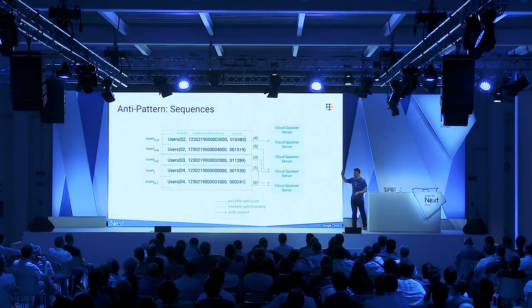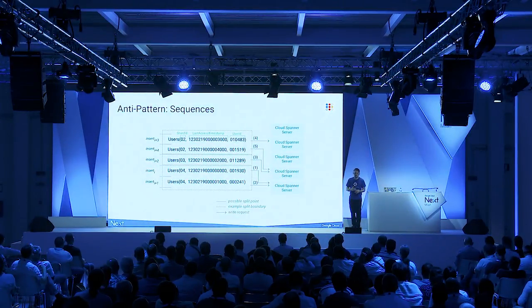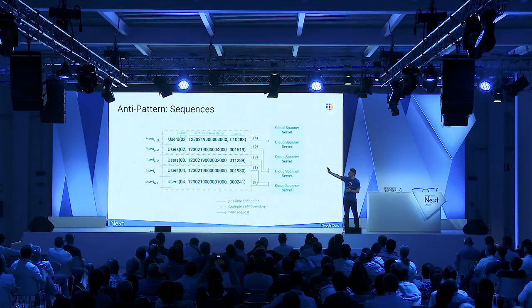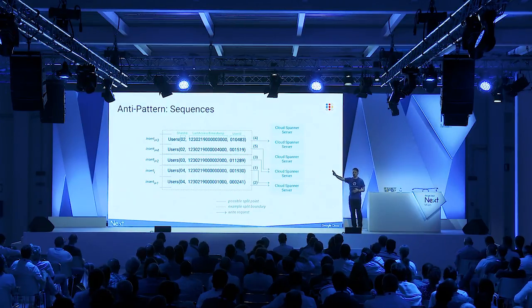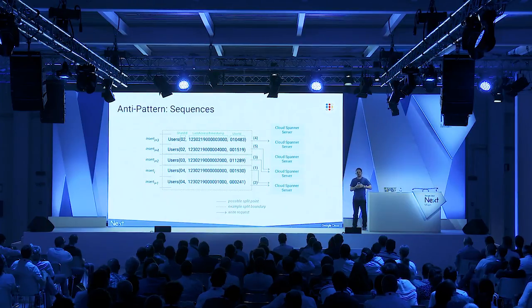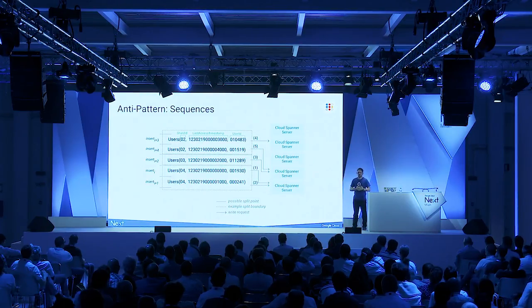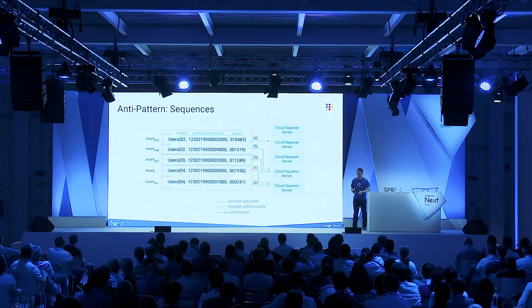Using timestamps as a primary key leads to hotspotting one compute node — all new data ends up in the last split of your table, handled by one compute resource. To avoid this, use UUIDs version 4 or sharding IDs. With a sharding ID you prefix your primary key with a sharding ID, which spreads the workload across multiple compute resources. Everything is also in our documentation with more detailed explanation on how to optimize schemas.